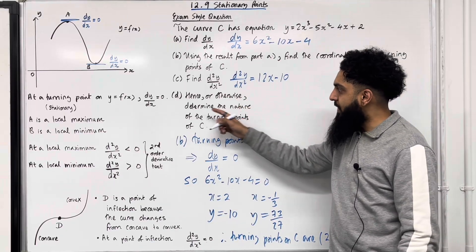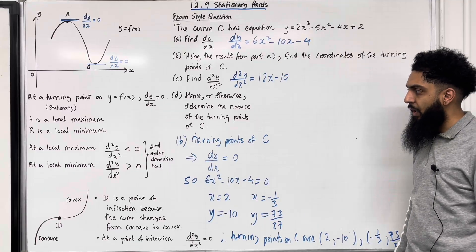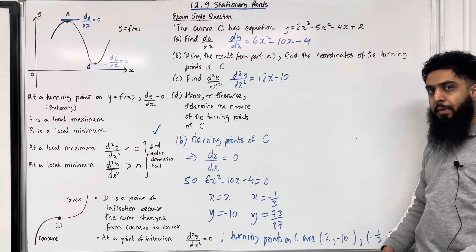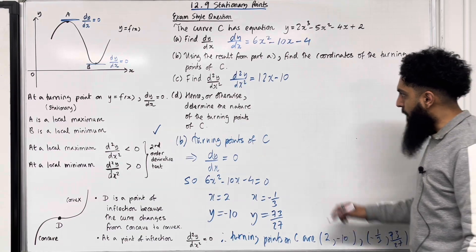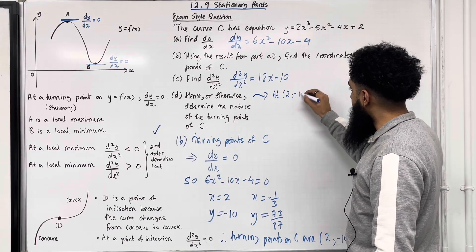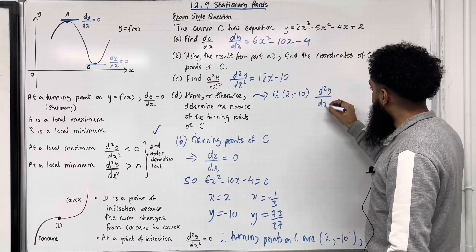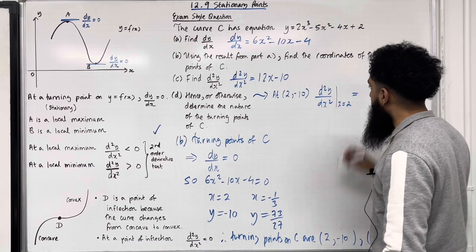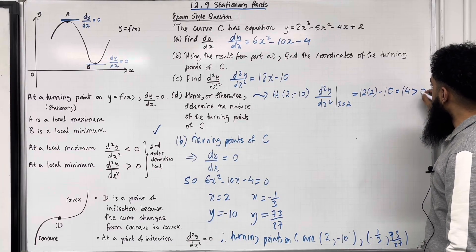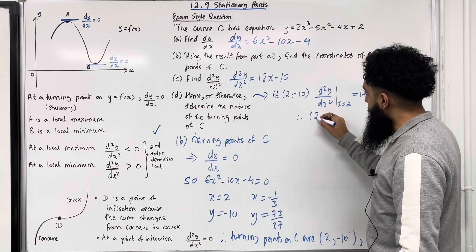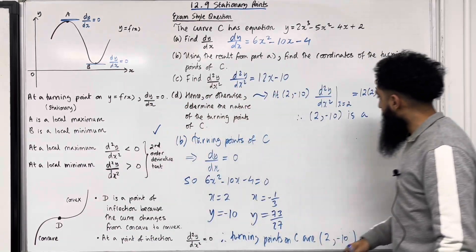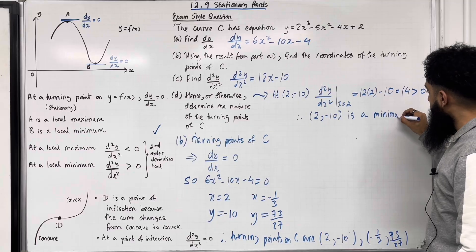Part D: hence or otherwise, determine the nature of the turning points of C. We need to apply the second order derivative test. For the first turning point (2, −10): d²y/dx² at x = 2 is 12 × 2 − 10 = 14. This is greater than 0. Therefore, (2, −10) is a minimum point.